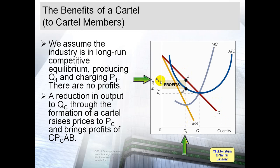Now, is there positive profit? You compare price with ATC. You can see here that the price PC is higher than ATC. Since price is higher than ATC, we have positive profit. Before joining the cartel, profit was zero — there was no economic profit. After joining, the price is higher than before, and we now have positive profit.